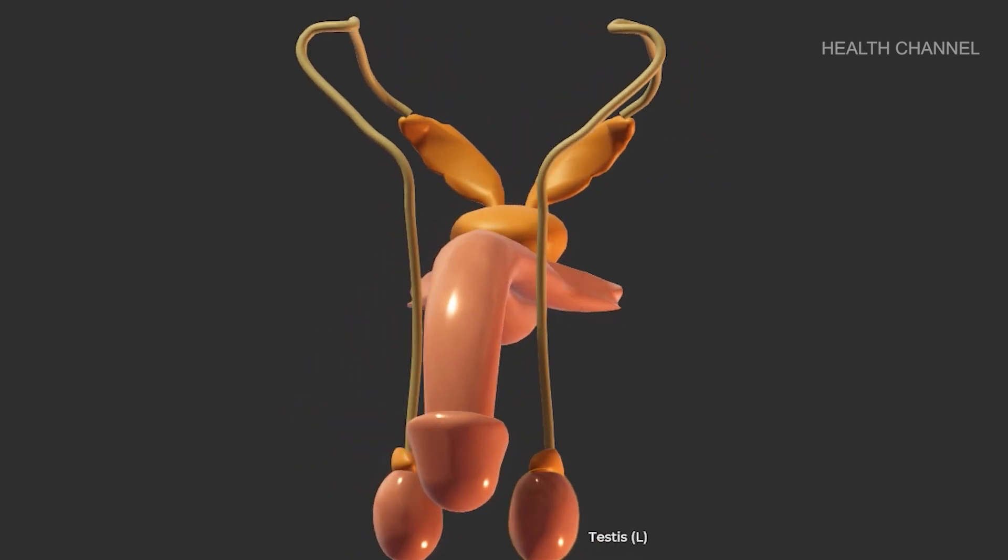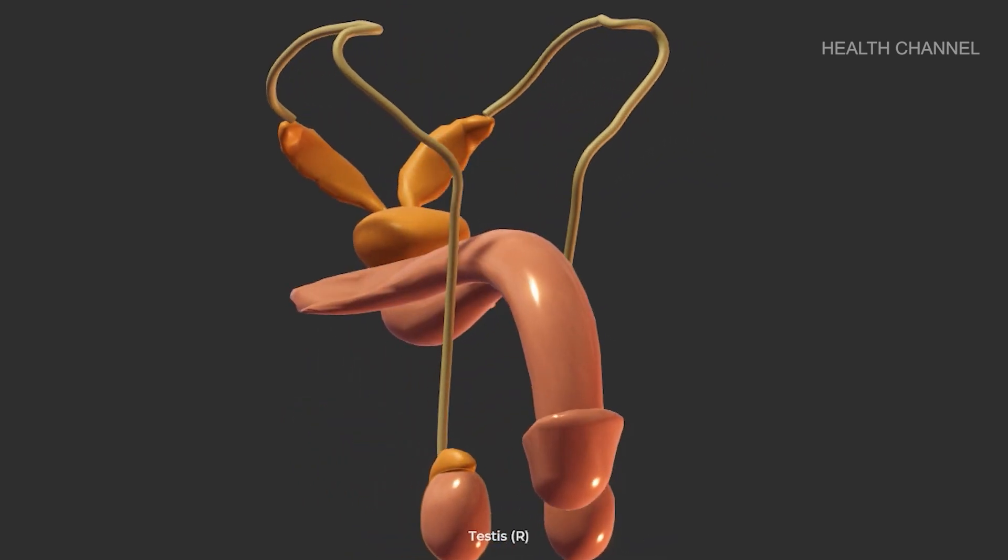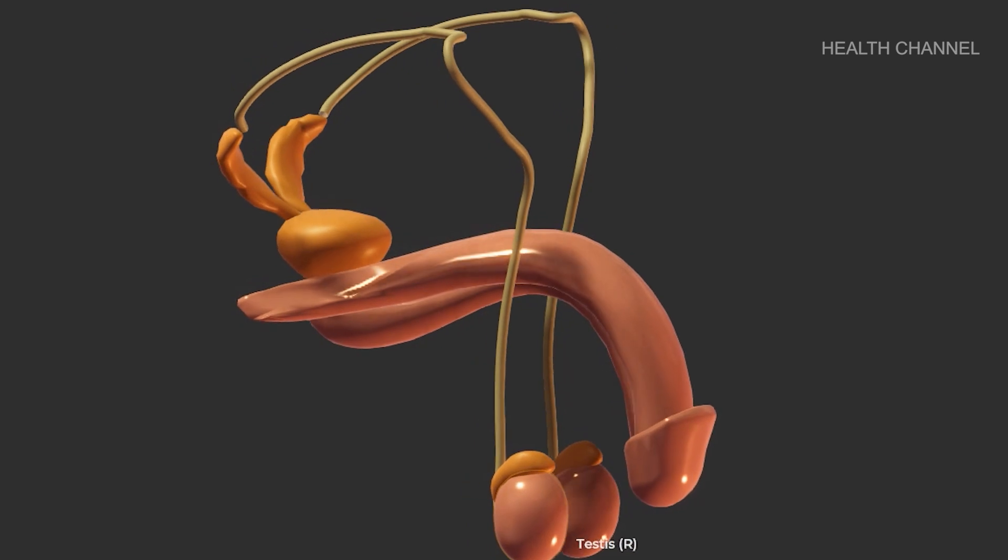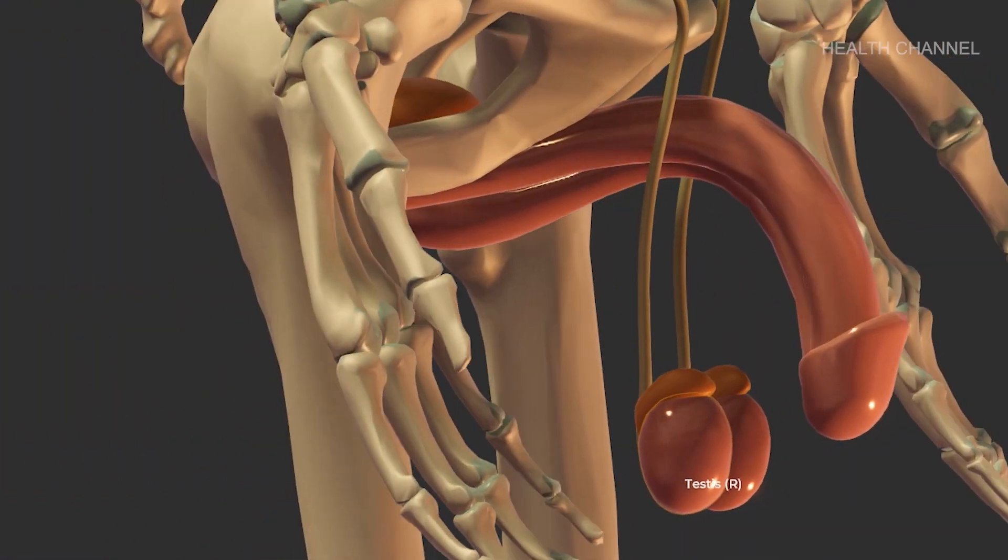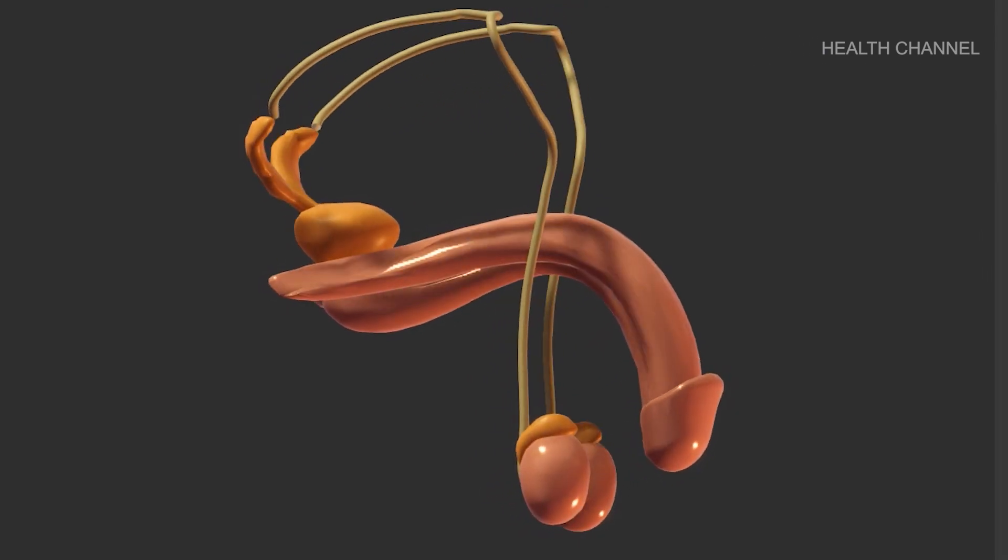Testicles, or testes, are oval organs that lie in the scrotum and are secured at either end by tissue known as the spermatic cord. The majority of males have two testes. The testes are in charge of creating sperm and testosterone.